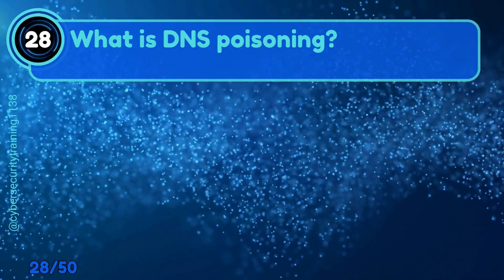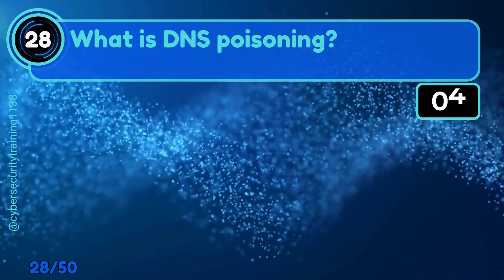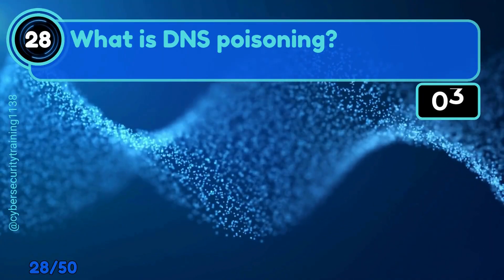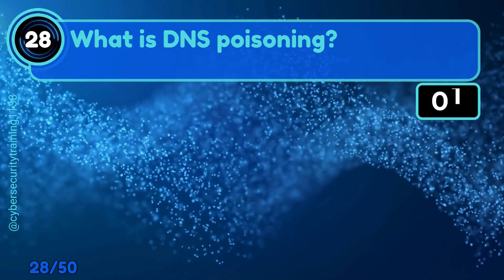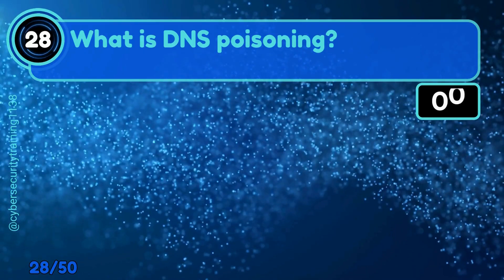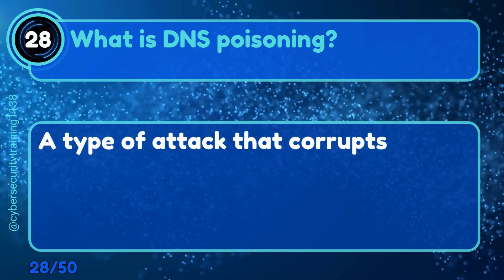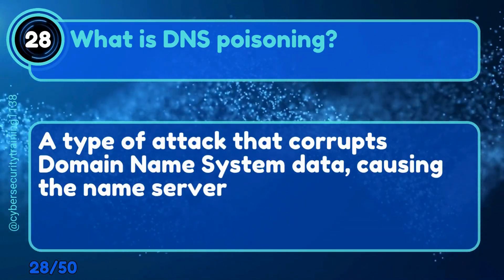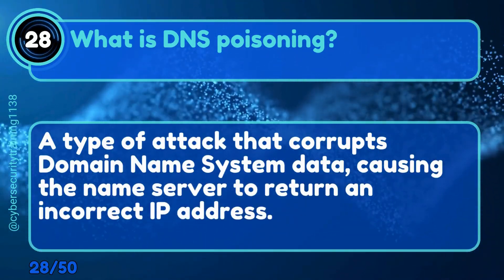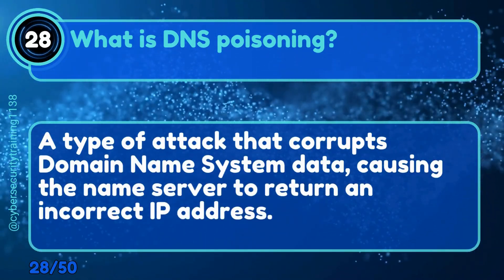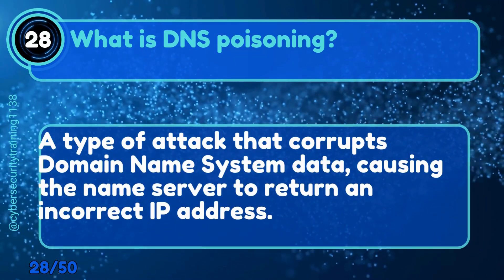Question 28: What is DNS poisoning? A type of attack that corrupts domain name system data, causing the name server to return an incorrect IP address.